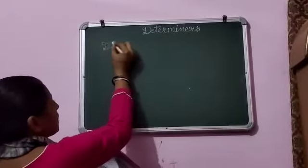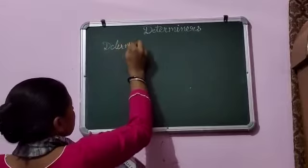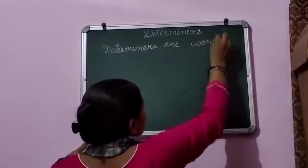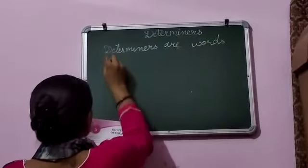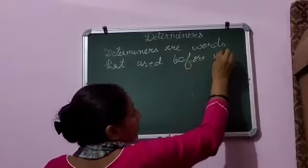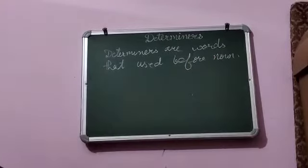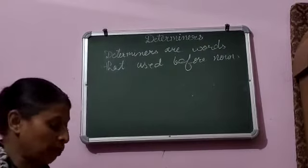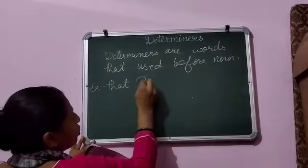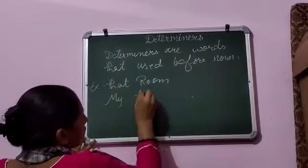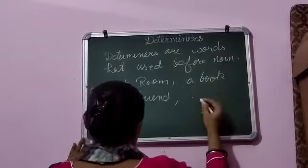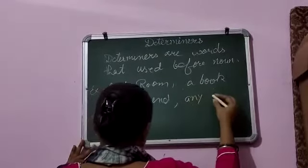What are determiners? Determiners are words that are used before nouns. Whatever determiners are, all of these are used before nouns. For example: that room, my friend, a book, any man.